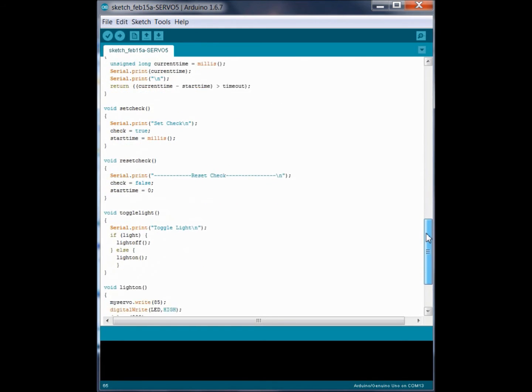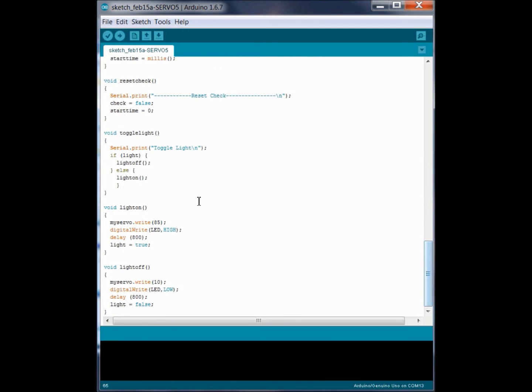These are our functions down here. Toggle light is right here. And it basically just says if the light value is true, run the light off function. And if the light value is false, otherwise, turn the light on. And that value is set down here in the light on and light off function. It writes a servo value to turn it that far. It turns our LED on, delays a little bit, and then says light true. So, that's the gist of it.